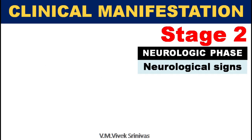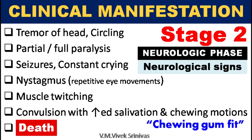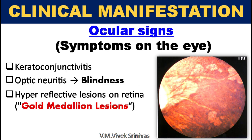Stage 2: Neurologic phase, where neurological signs are observed. Symptoms like tremor of the head, circling, partial or full paralysis, seizures, constant crying, repetitive eye movement, muscle twitching, and convulsions with increased salivation and chewing motions are observed. Mostly this phase ends with death of the animal. Some symptoms like paralysis and increased salivation are also observed in rabies infection and can be difficult to distinguish. Eye symptoms are also noticed due to keratoconjunctivitis and optic neuritis, which may lead to blindness.